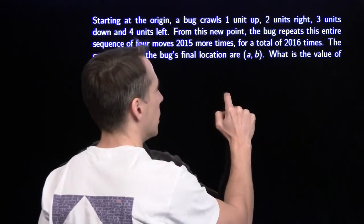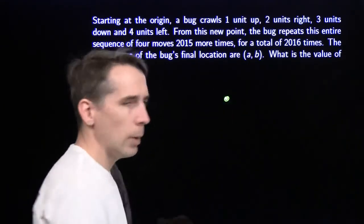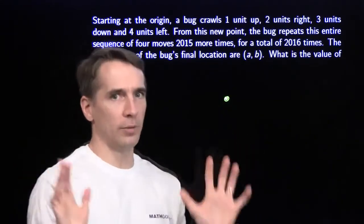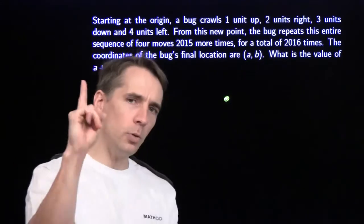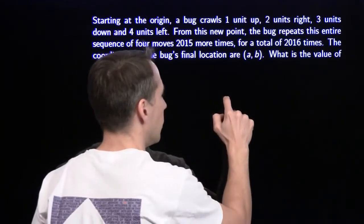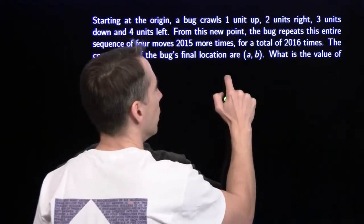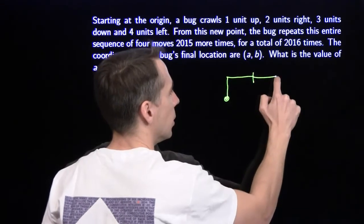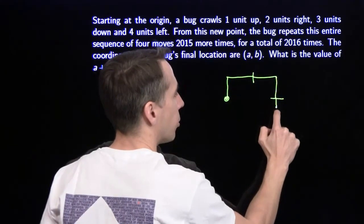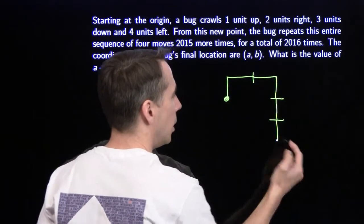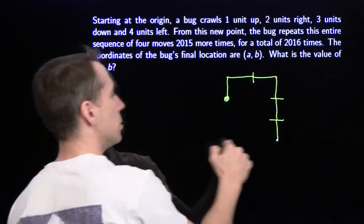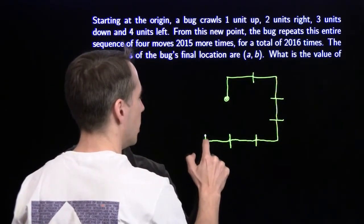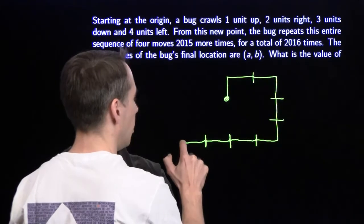We'll just play with it and trace through the path once. We go up 1, right 2, then down 3 units, then left 4 units.